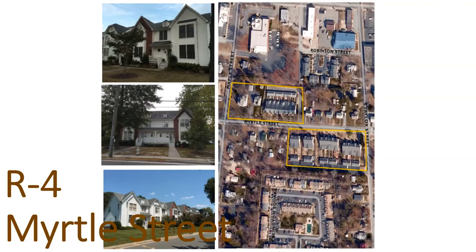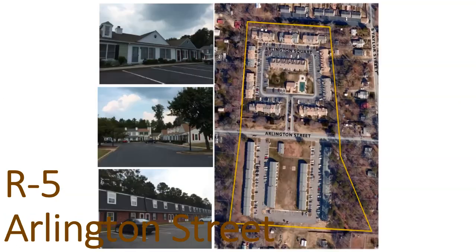An example of R4 zoning is the infill development known as Townhomes along Myrtle Street. An example of R5 zoning is these two multifamily developments along Arlington Street — Misty Pines and Arlington Square.